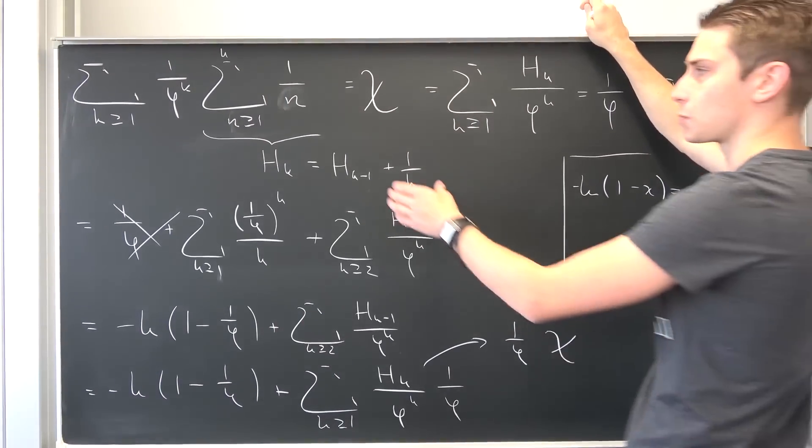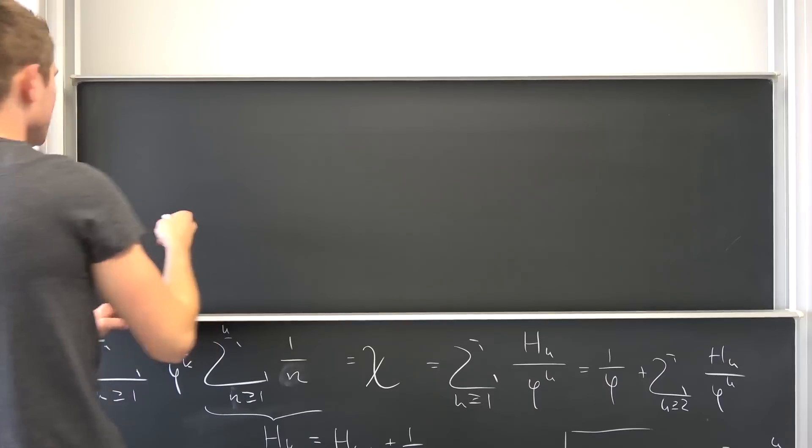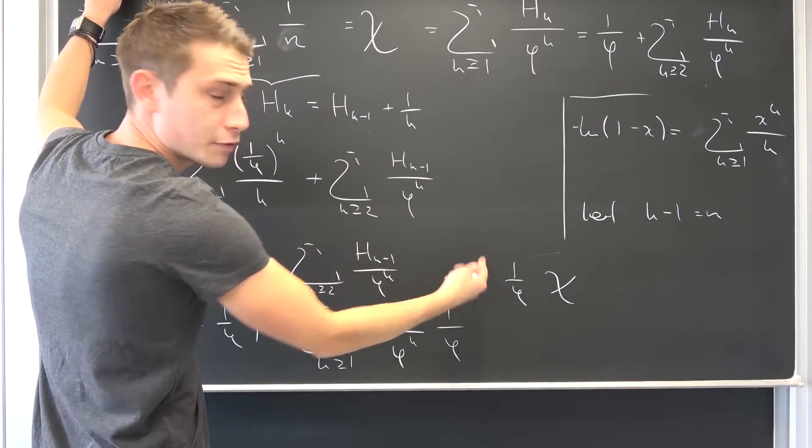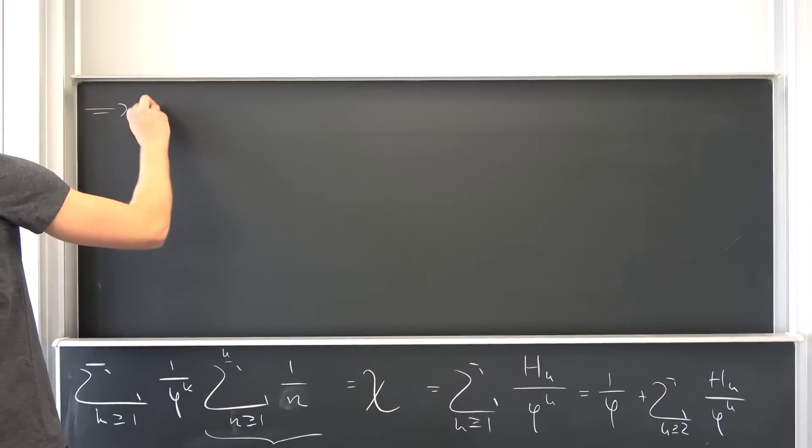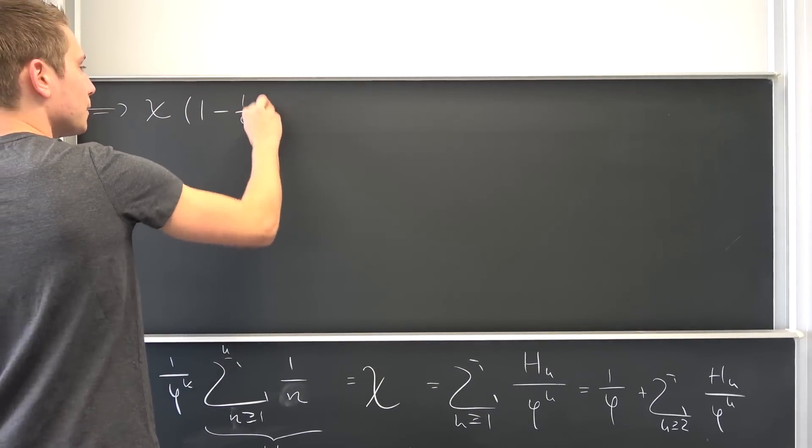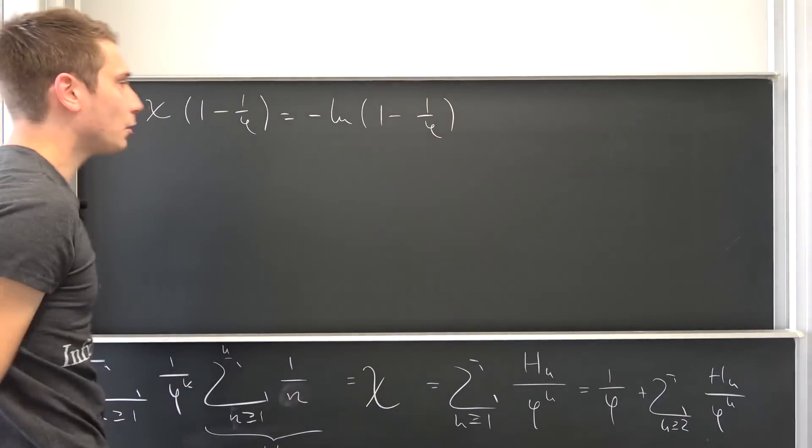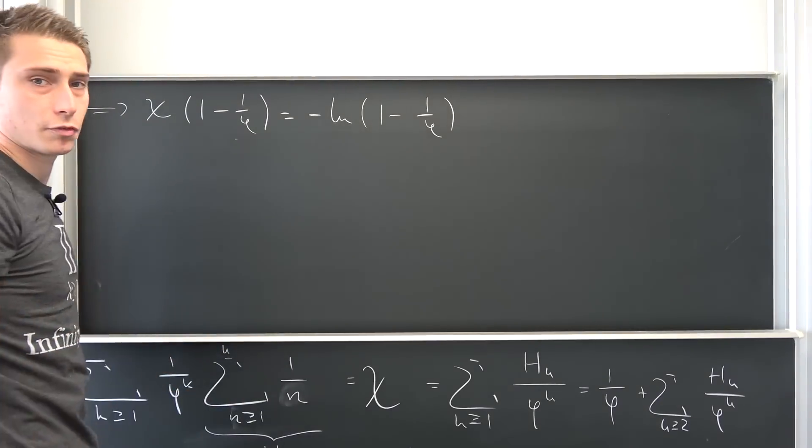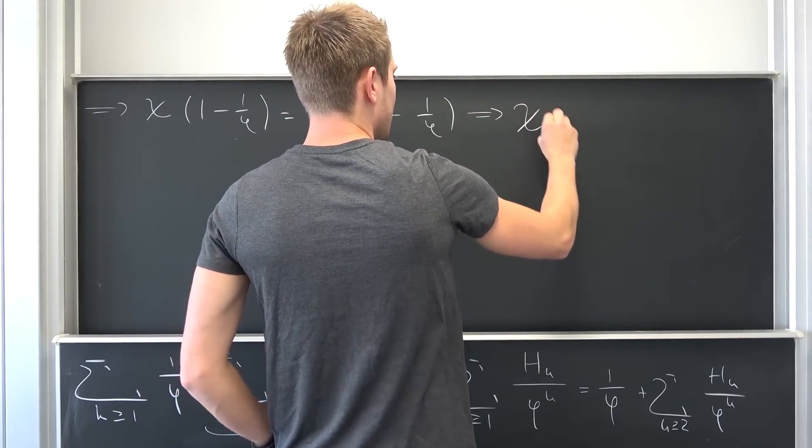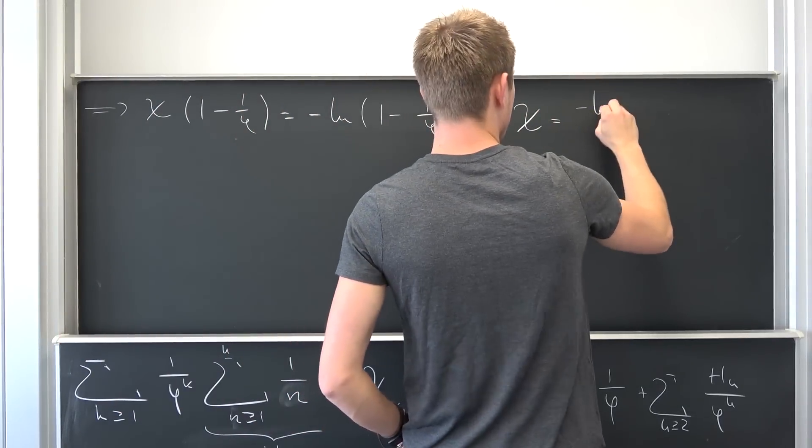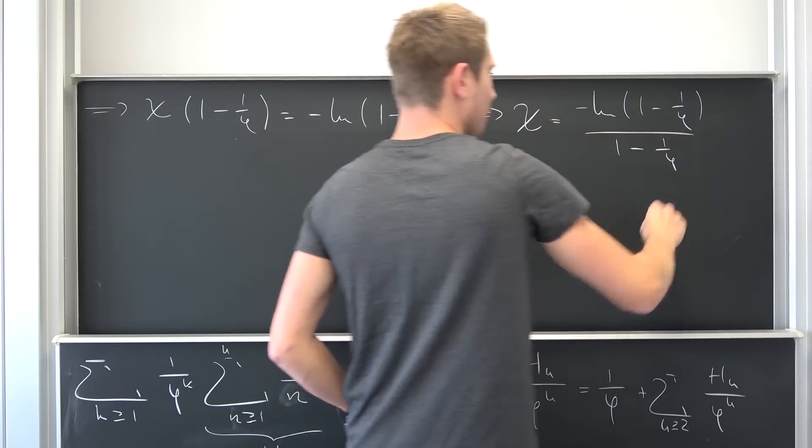We have found an expression which is with respect to itself yet again. Meaning overall, if we subtract 1 over phi times h on both sides, we end up with h times 1 minus 1 over phi being equal to negative natural log of 1 minus 1 over phi. Now we can divide both sides, and this thing is not equal to zero because 1 over phi is by definition not equal to zero. We are going to be left with h being equal to negative the natural log of 1 minus 1 over phi over 1 minus 1 over phi, and then we are done.